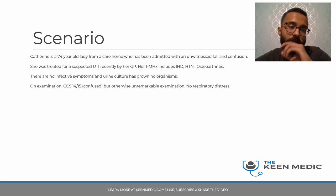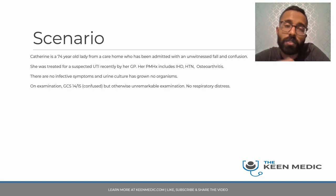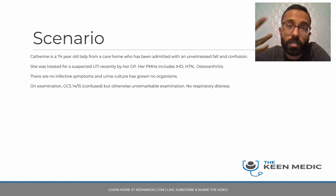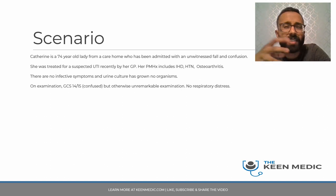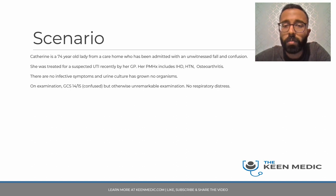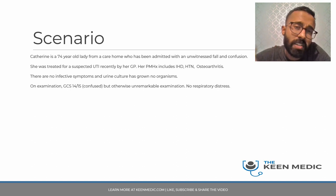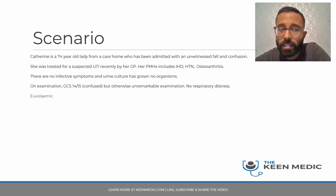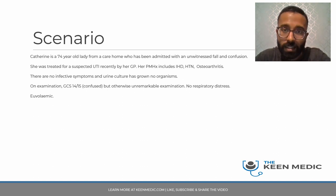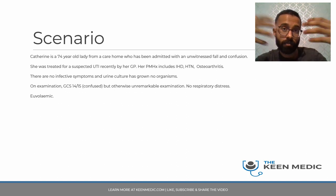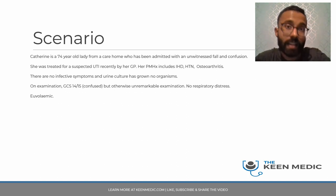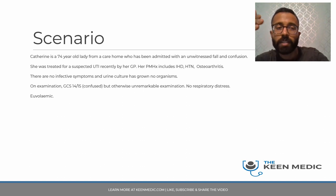On examination the GCS is 14 out of 15 - she has confused speech but is obeying commands and her eyes open spontaneously, so she's slightly muddled hence the GCS of 14. Otherwise she's completely normal - she's in no respiratory distress, so maybe there's no underlying infection. She's also euvolemic, which is important because a hypovolemic or dehydrated patient is more likely to have renal impairment causing confusion in the elderly.